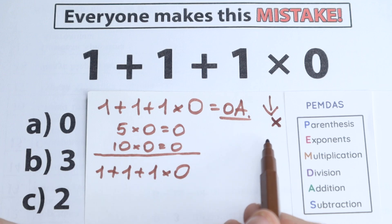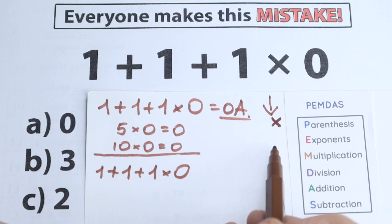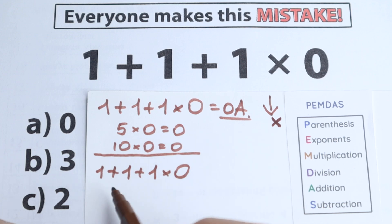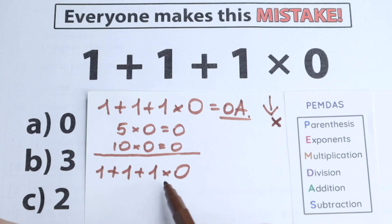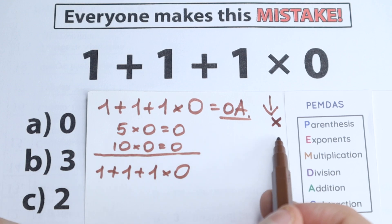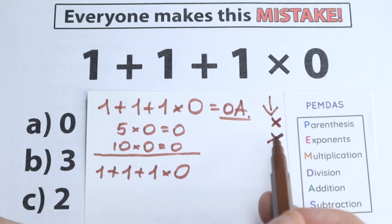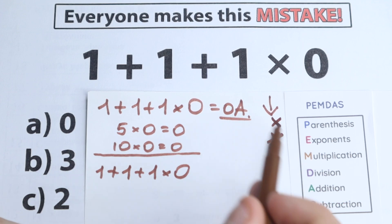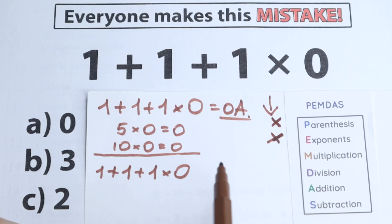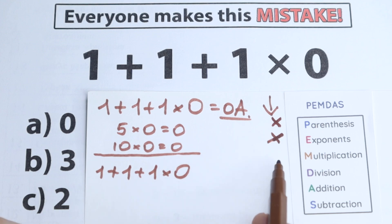The next step according to PEMDAS is Exponents. Are there any exponents here? No — we don't see any squares or cubes, which is really great, so we can easily skip this part. Exponents can be the most complicated step; for example, if you had 2 to the 20th power, you'd need to evaluate that before the multiplication and division step.